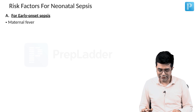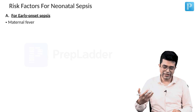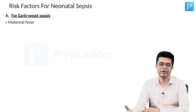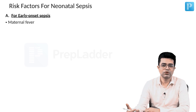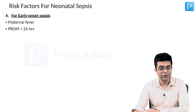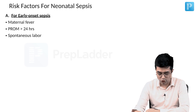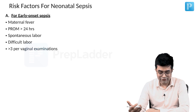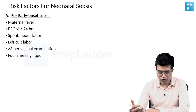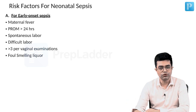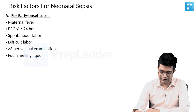For early onset sepsis, the chances of infection in the baby are more if the mother has an infection — that is, maternal chorioamnionitis. So, maternal fever, prolonged rupture of membrane more than 24 hours, spontaneous labour, difficult labour, more than 3 per vaginal examinations before delivery, and foul smell in liquor are the common risk factors associated with early onset sepsis.